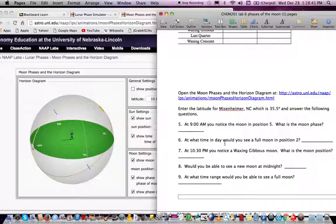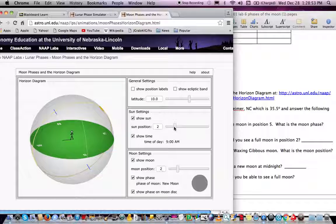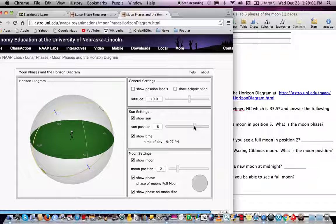At what time of day would you see a full moon in position 2? So we can change this to 2, and then we can change the time to see when we would be seeing a full moon. And there we go, there's a full moon there, and we would see the full moon at 9 p.m.